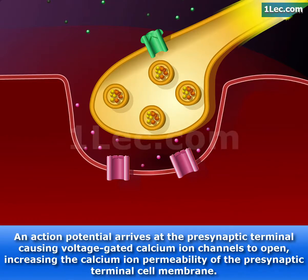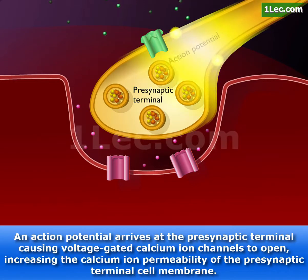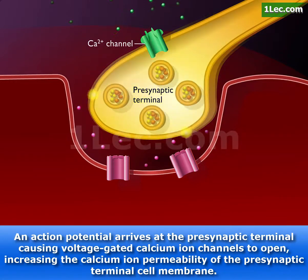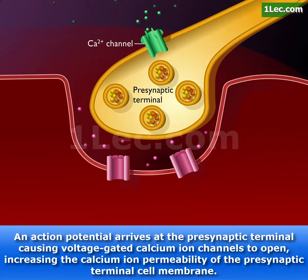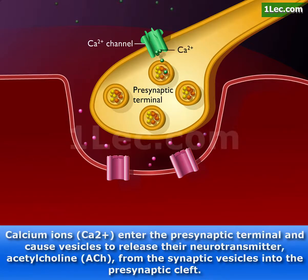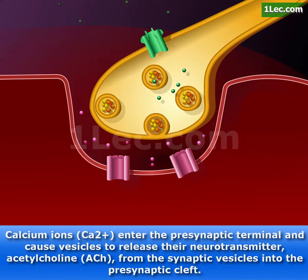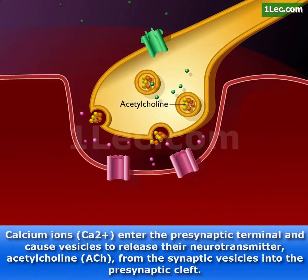An action potential arrives at the presynaptic terminal causing voltage-gated calcium ion channels to open, increasing the calcium ion permeability of the presynaptic terminal cell membrane. Calcium ions enter the presynaptic terminal and cause vesicles to release their neurotransmitter acetylcholine from the synaptic vesicles into the presynaptic cleft.